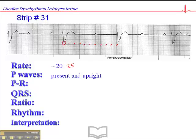We see P waves — they're present, upright, and contoured — but there is no consistent PR interval, which makes us think: is there AV dissociation here? And if there's AV dissociation, is this a third degree AV block?